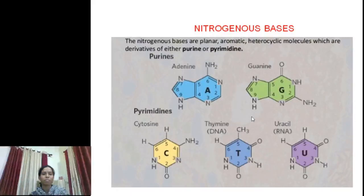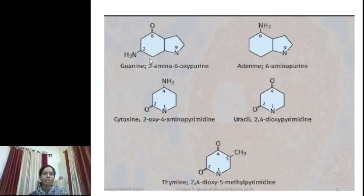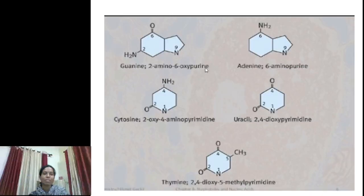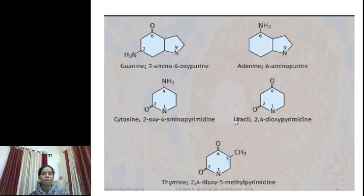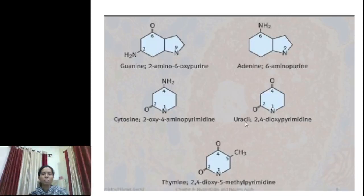The basic skeleton of purines is the same; only substituents are different. Similarly, the basic skeleton of pyrimidines is the same; only substituents are different. Purines are guanine, that is 2-amino-6-oxypurine, and adenine, that is 6-aminopurine. Pyrimidines are cytosine, that is 2-oxy-4-aminopyrimidine; uracil, that is 2,4-dioxypyrimidine; and thymine, which is 2,4-dioxy-5-methylpyrimidine.